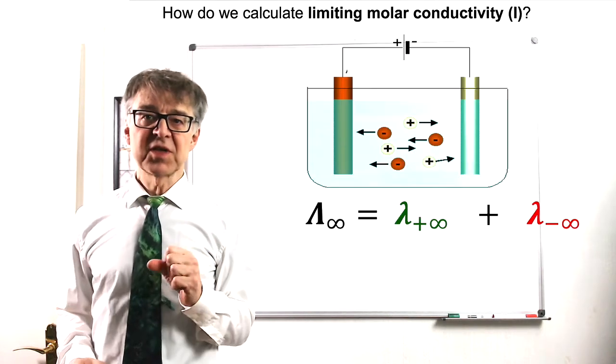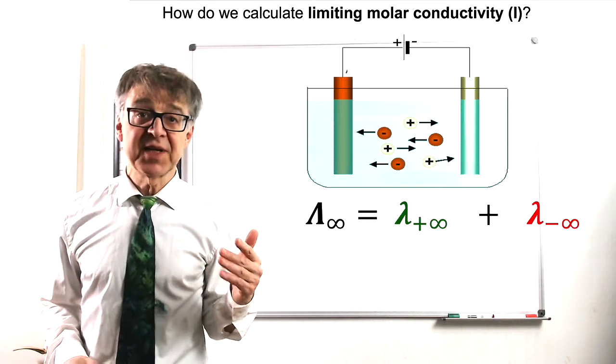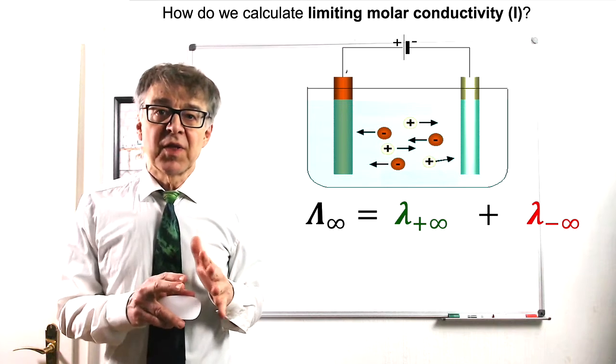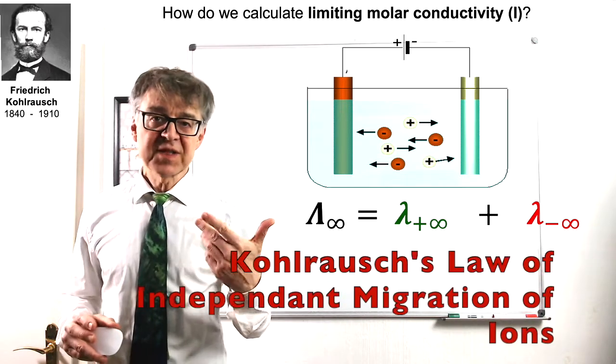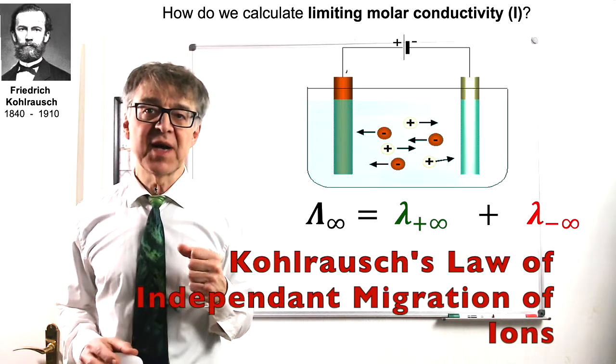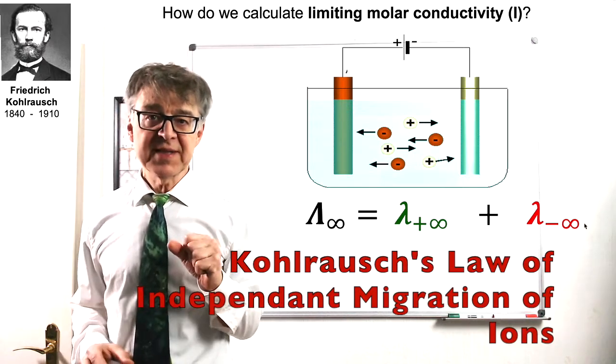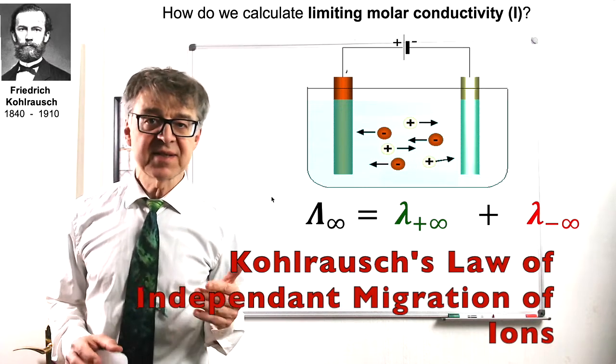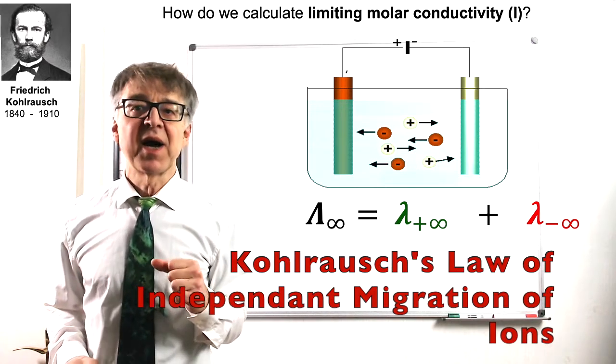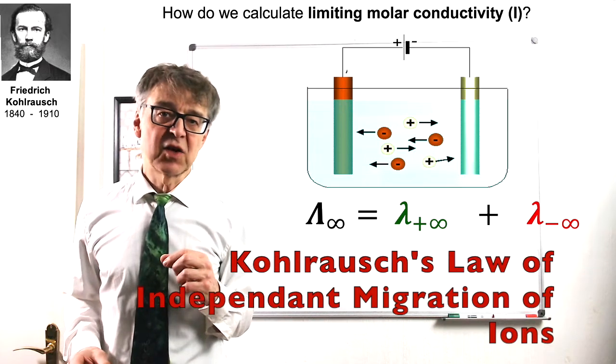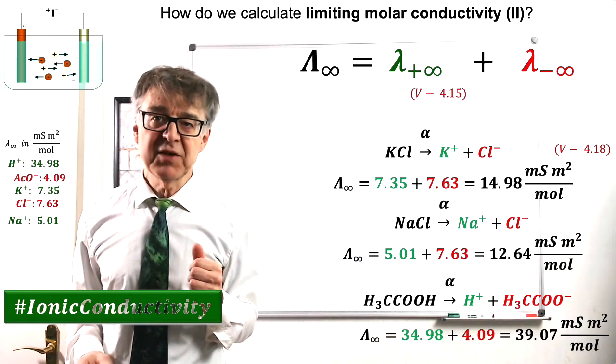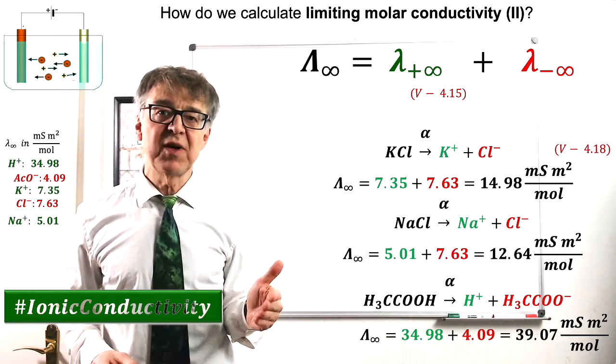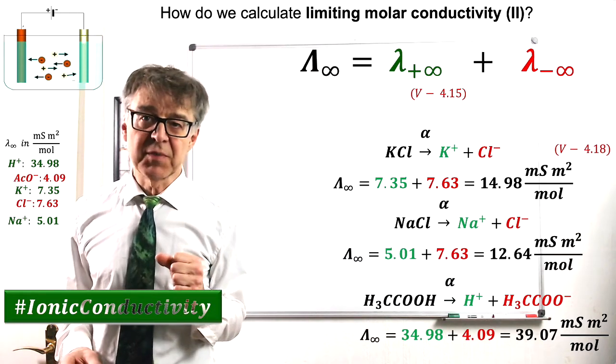The limiting molar conductivity of an electrolyte can be split up to the contribution of the cations and the anions. In this well-known law of independent migration, Kohl-Rausch states that the limiting conductivity of an electrolyte simply can be calculated by adding up the limiting ion conductivities. So by using a table of limiting ion conductivities, we are able to calculate many electrolyte combinations.